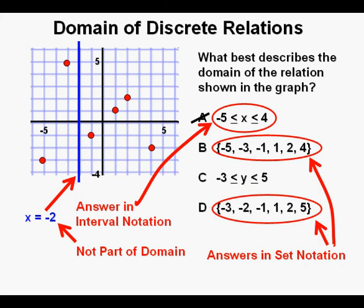When we have individual points that are not connected, we say that the data are discrete, meaning that the points are not connected as in a continuous relation. And discrete data can be represented in set notation as they are in answers B and D.